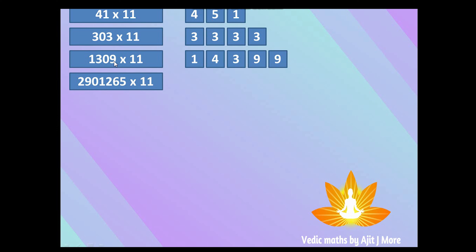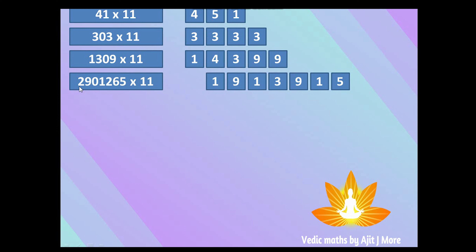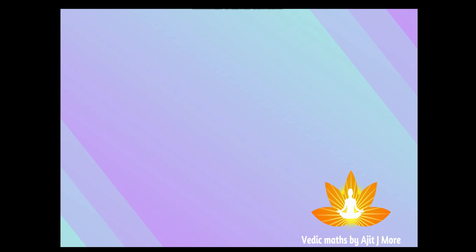One more example: 29,012,516,5×11. Put one zero on both ends. Adding consecutive digits: 0+5=5, 5+6=11 — keep 1 carry 1 — 6+2=8 plus carry = 9, 2+1=3, 1+0=1, 0+9=9, 9+2=11 — keep 1 carry 1 — 2+0=2 plus carry = 3. I hope you are getting it — isn't it simple?